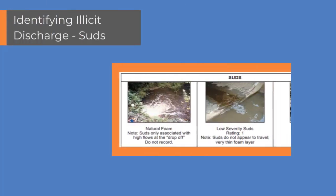Some suds occur naturally and do not need to be reported. It can be difficult to tell them apart, but suds from chemicals or sewage tend to be white, with a foul or perfumed scent, and greater around outputs. While natural foam will usually be more tan or brown in color, smell of dirt or fish, and be widespread near shorelines.